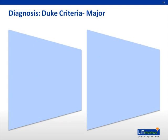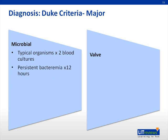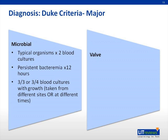Major criteria can be thought of in terms of microbial and valvular. The microbial criteria include: 1) Two separate blood cultures positive for typical microorganisms, including viridans streptococci, Streptococcus bovis, HACEK organisms, Staph aureus, or enterococci. 2) Persistently positive blood cultures with an organism consistent with infective endocarditis — blood cultures must be drawn more than 12 hours apart. 3) Positive blood cultures from three of three or three of four bottles. 4) Positive blood culture for Coxiella burnetii or anti-phase 1 IgG antibody titer greater than 1 to 800.